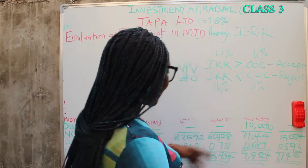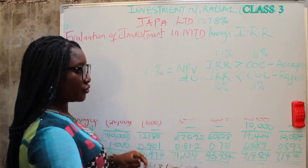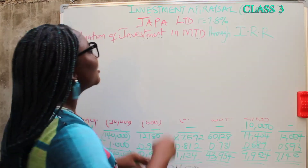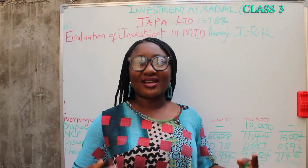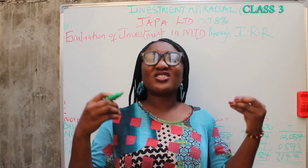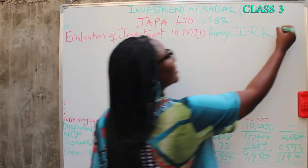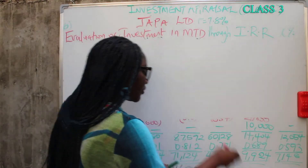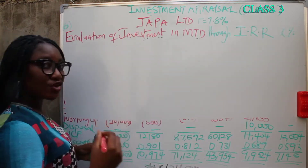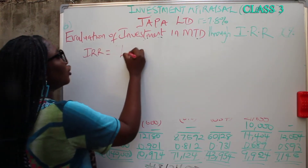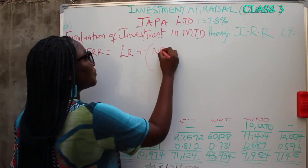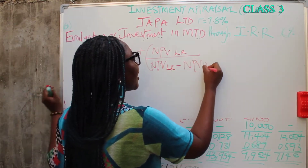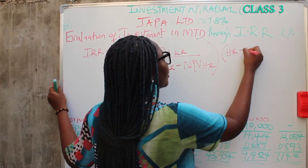Now let's solve the IRR. To solve IRR, it is done by interpolating — extrapolating between your guesses. You're trying to look for a particular rate and you get that rate by guessing. The formula is: IRR equals lower rate plus NPV of lower rate, over NPV of lower rate minus NPV of higher rate, times higher rate minus lower rate.